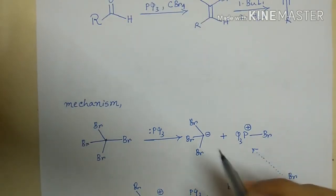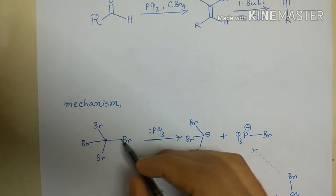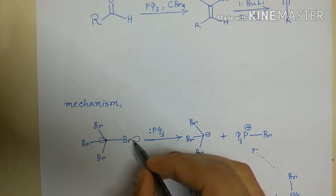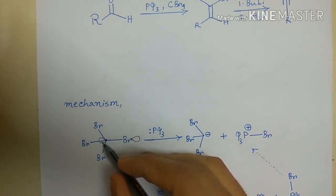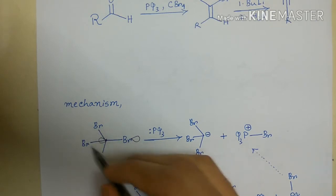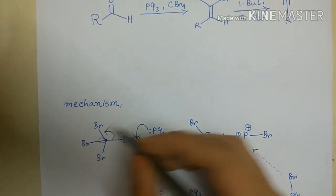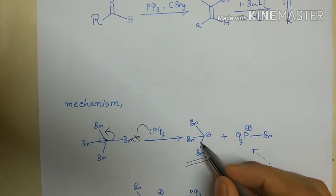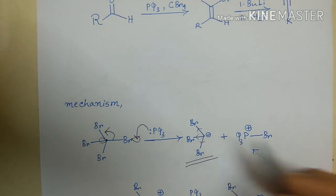Instead, the phosphine attacks the LUMO of the C–Br bond. There are two LUMOs — one on each side — but attack on the LUMO closer to the three bulky bromine atoms is not favorable for steric reasons. So phosphine attacks the accessible LUMO, generating a carbanion on carbon that is stabilized by the inductive electron-withdrawing effect of the surrounding bromine atoms.